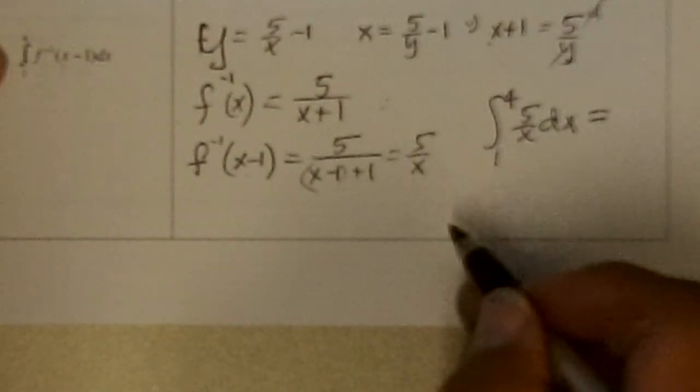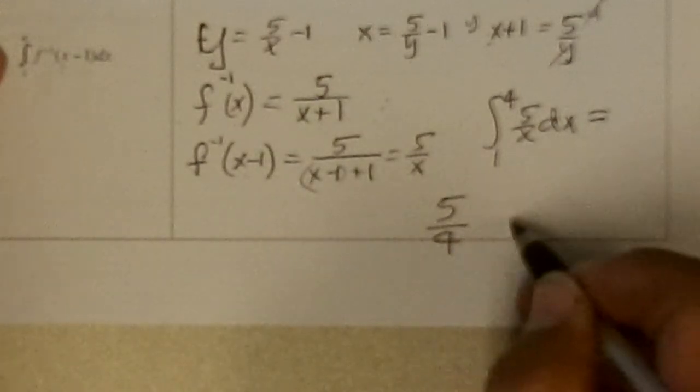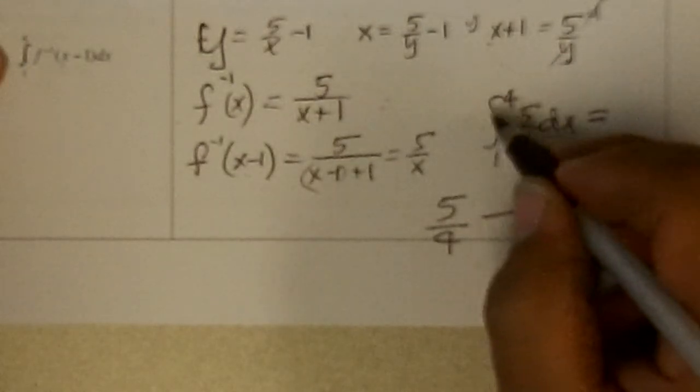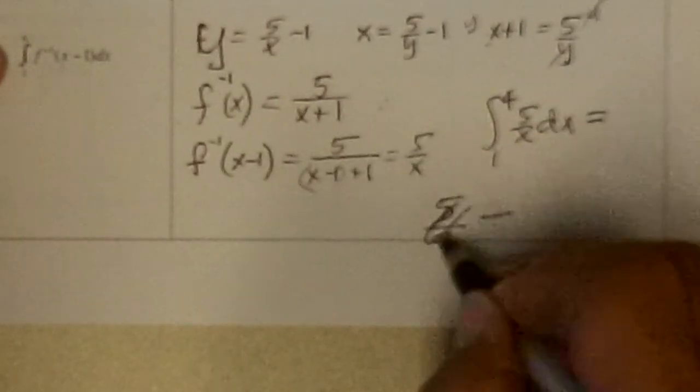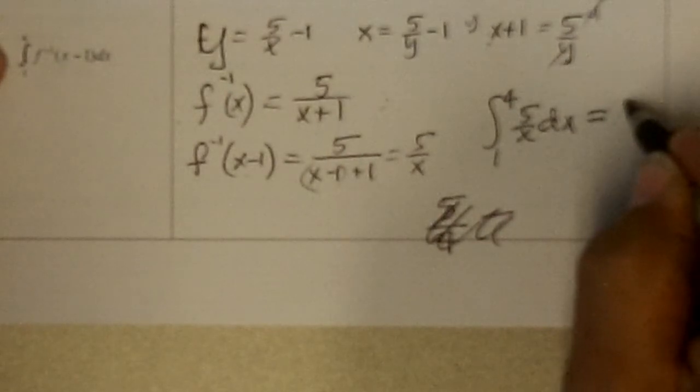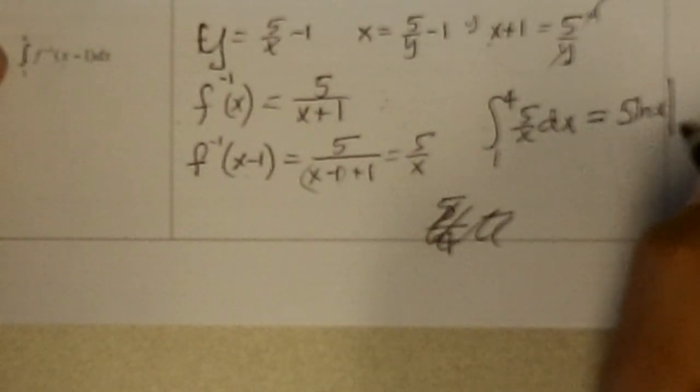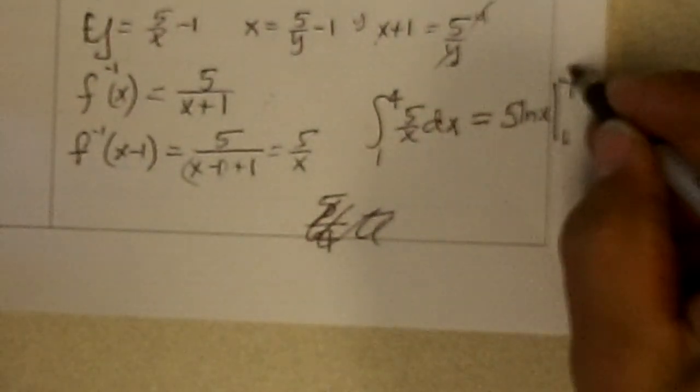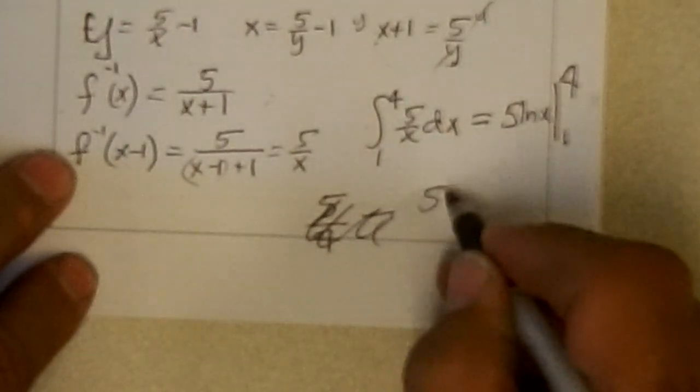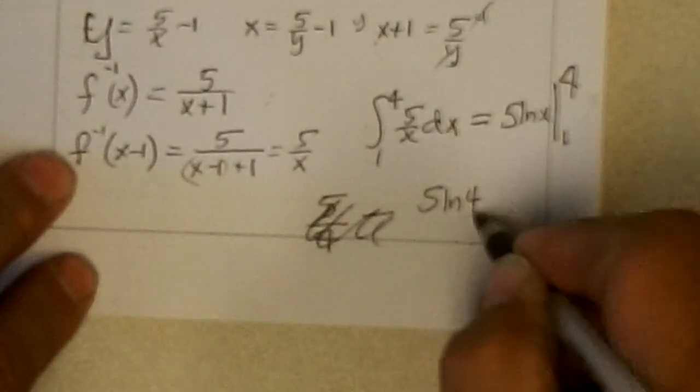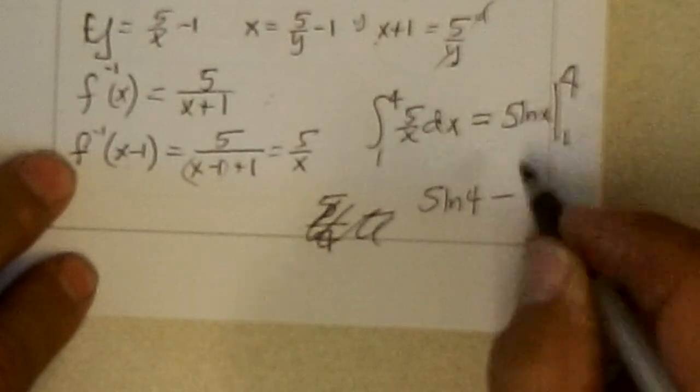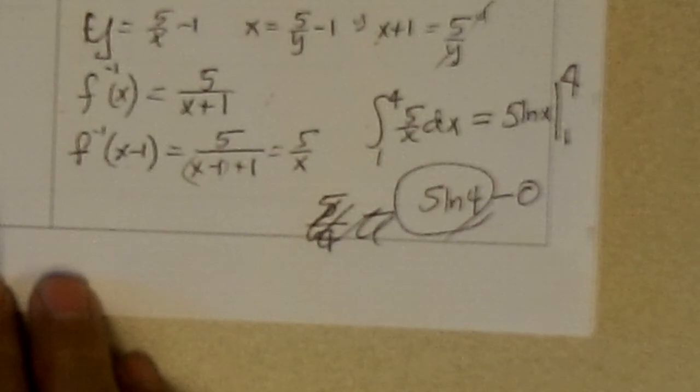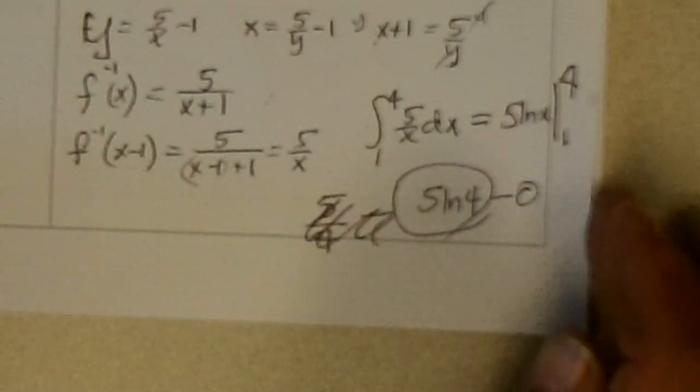Which is, integrate, the 5 comes out, and 1 over x is ln x, so this becomes 5 ln x evaluated from 1 to 4, and, if I put 4 in there I get 5 ln 4 minus, 1 in there is 0 times 5 is 0. So 5 ln 4 is the exact answer.